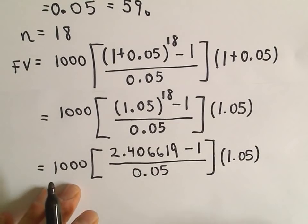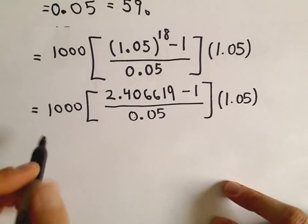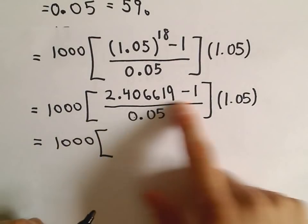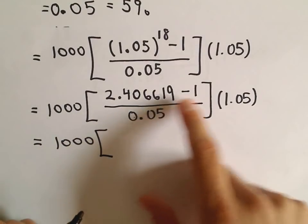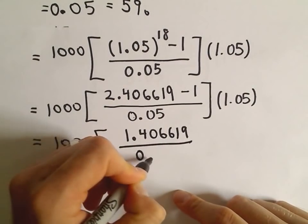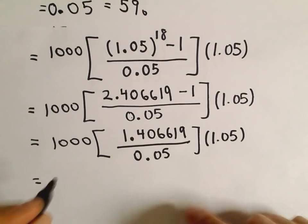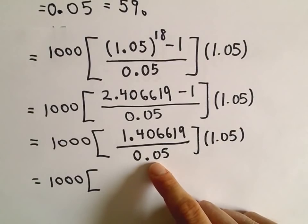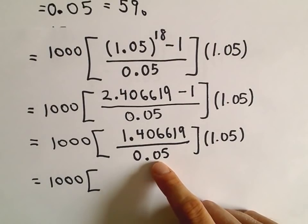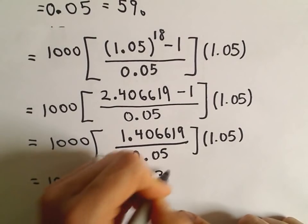And this is something you do have to be careful about. You're dealing with money. You don't want to round things off just sort of arbitrarily because over a long period of time, those round-off errors are going to accumulate into something significant. So I tend to use more decimal places versus less just to be careful. So now I'm just going to do the subtraction on top. 2.406619 minus 1, that would leave us with 1.406619, all divided by 0.05. I'm going to divide that by 0.05. I'm getting this to be 28.13238.